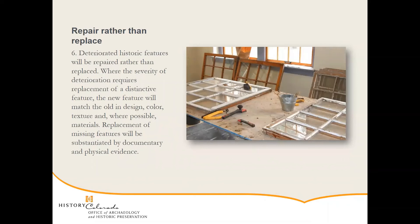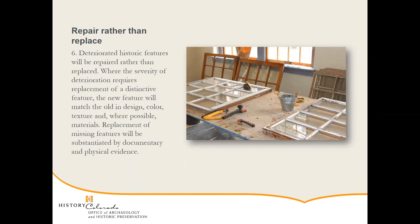Number six is pretty easy: we want to repair rather than replace. We most often see this with windows — we want to repair historic windows rather than replacing them. If a feature is missing and has to be replaced, you want to make sure that's substantiated by documentary and physical evidence rather than just what you think might go there. Number seven is also pretty easy: when cleaning, use the gentlest means possible. Really all this means is please do not sandblast your building. Here we can see a good example of bricks that have been horrifically damaged by sandblasting, compared to someone washing some stones with soap and water to get some buildup off — that would be the ideal.